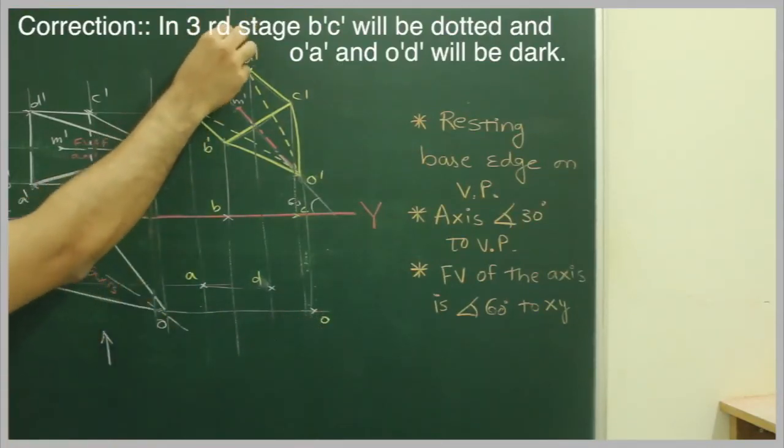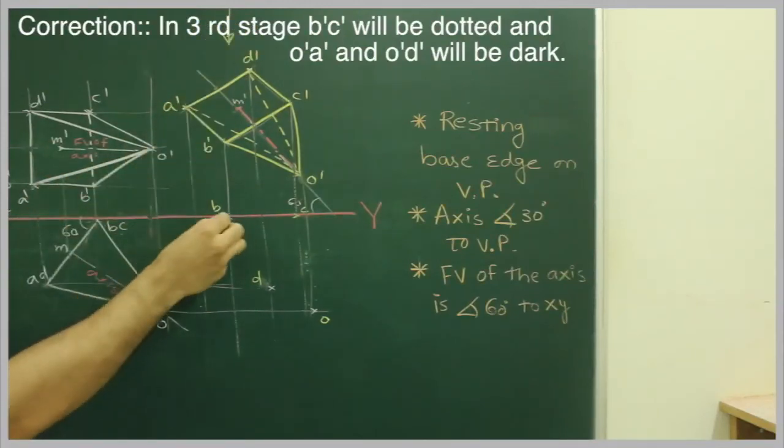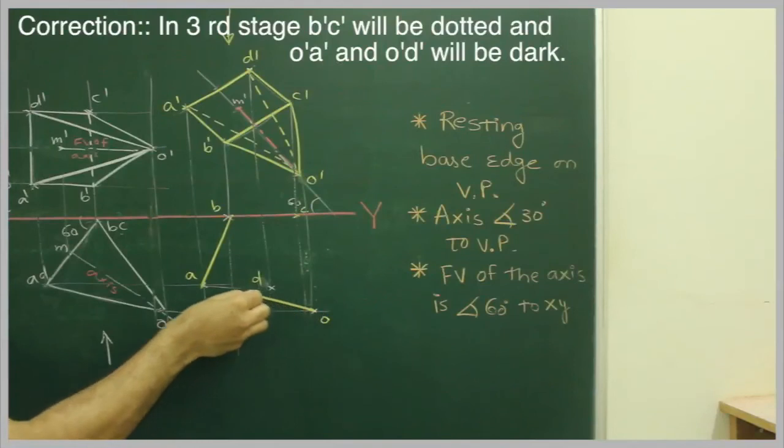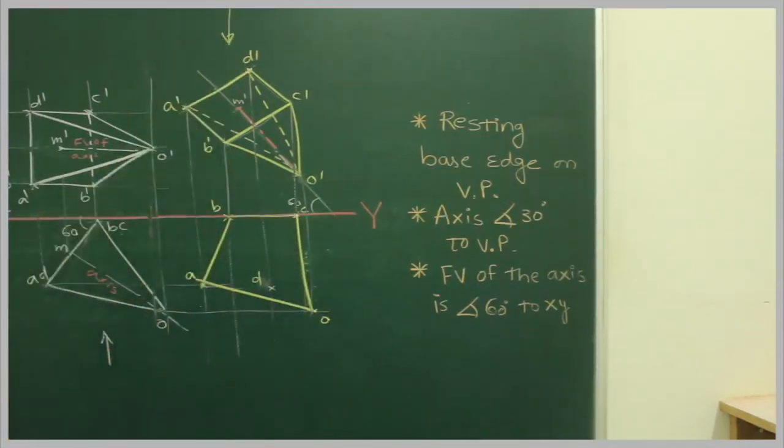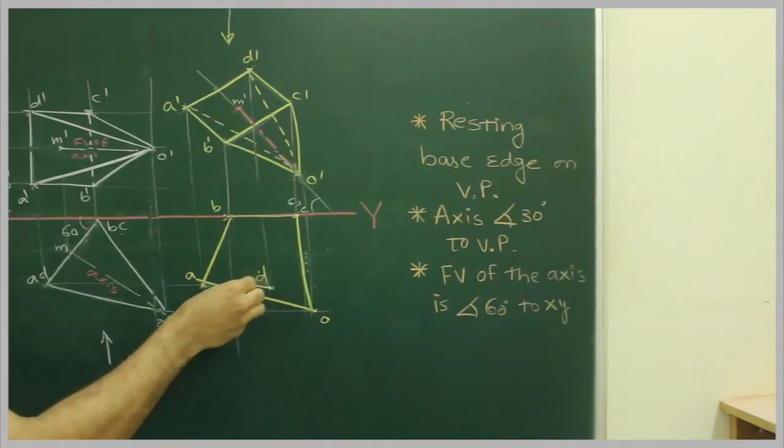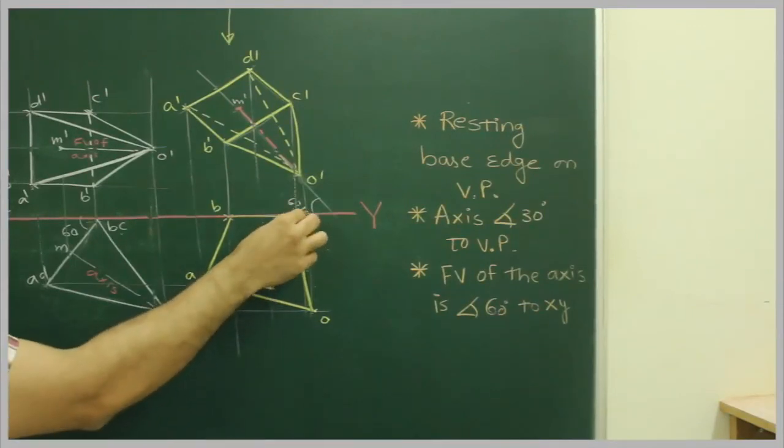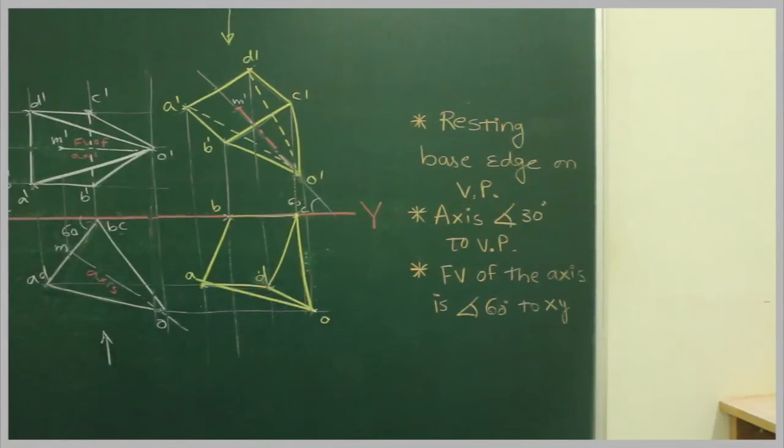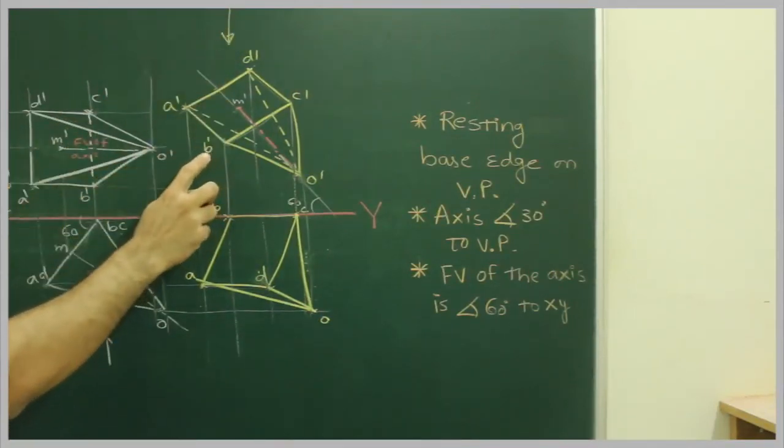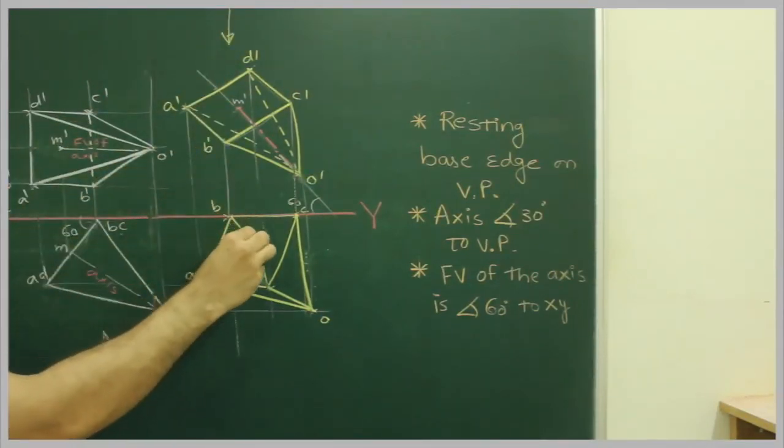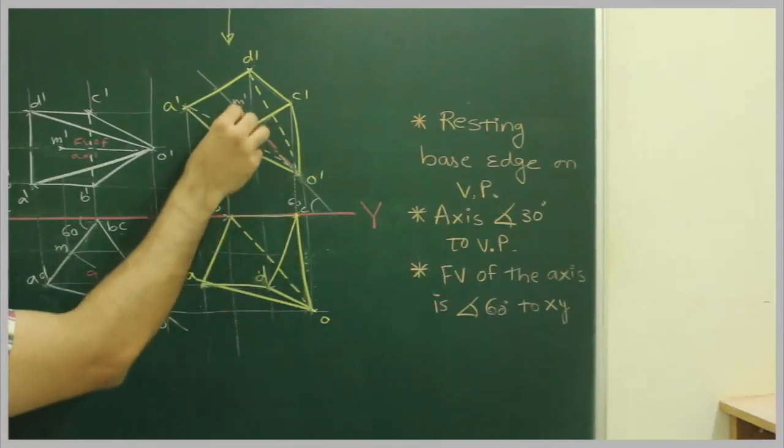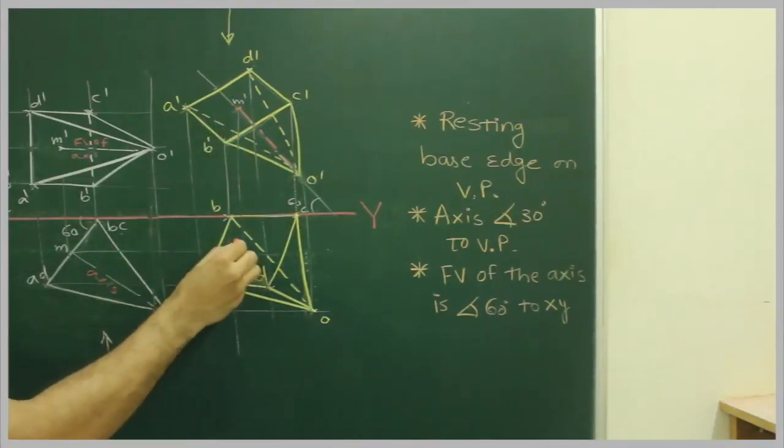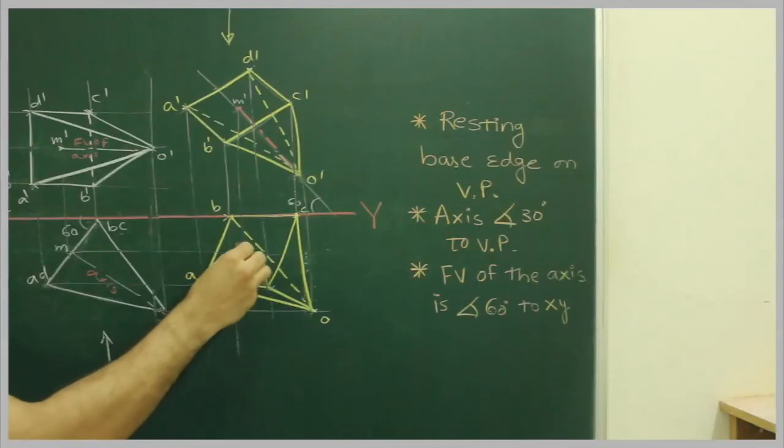Now observer is looking from top. First let me draw extreme boundary. When observer is seeing from the top side, D' is nearer to here so that means point D' is in that corner. So from D' to A, D' to C and O' to D' will be that point. When observer will see from the top, B' is away from here so B' to O' is dotted line. We can extend M' from here so we get point M'. So we can draw out there in this way.